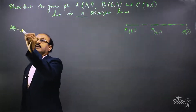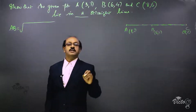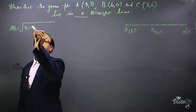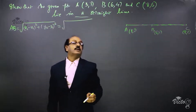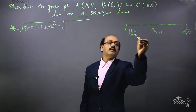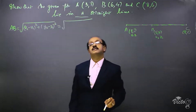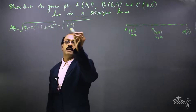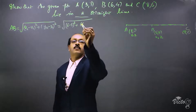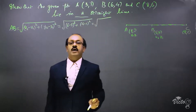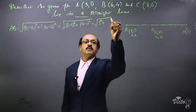Find the length of AB. When doing a problem, write the formula once. The distance formula is: root of (x2 − x1)² + (y2 − y1)². Here, A(3,1) is taken as (x1, y1) and B(6,4) as (x2, y2). So x2 − x1 = 6 − 3, and y2 − y1 = 4 − 1.